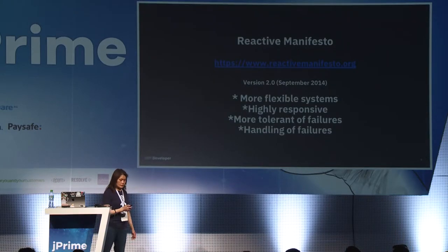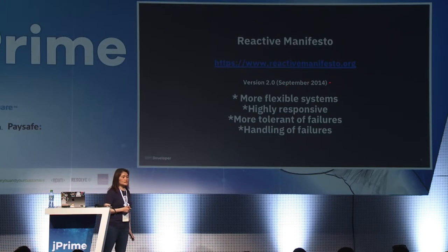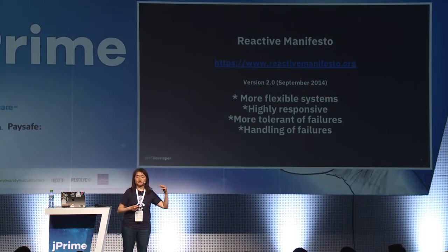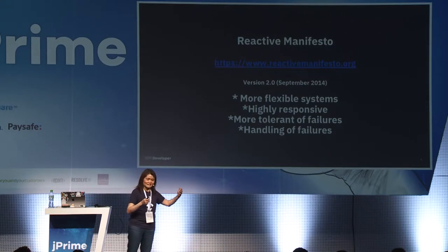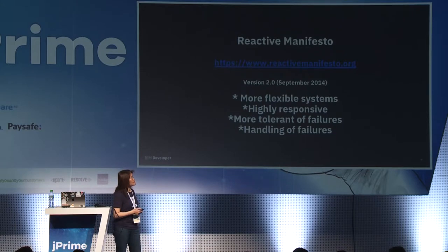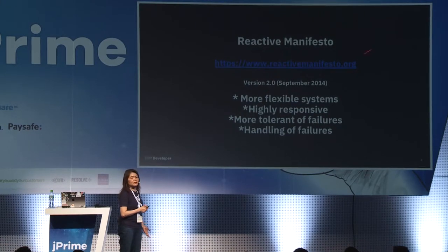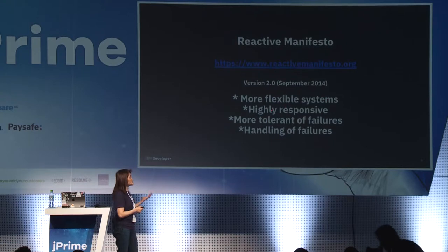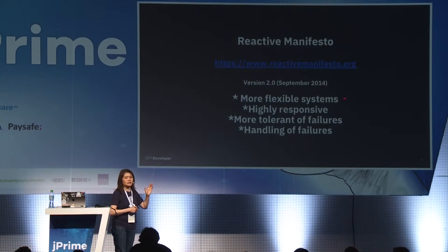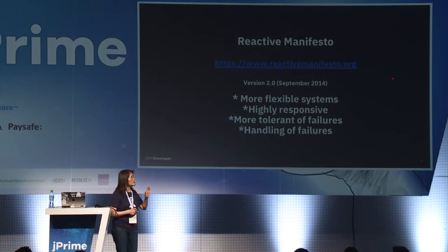I want to point out the Reactive Manifesto — there's a link to it. It's a set of guidelines and principles led by Lightbend, the company led by Martin Odersky, creator of Akka, which also produces Lagom and all of the Scala systems. The latest version is 2.0, which came out in September 2014. To summarize, it describes more flexible systems that are highly responsive and very tolerant of failures, and highlights how failure is handled.